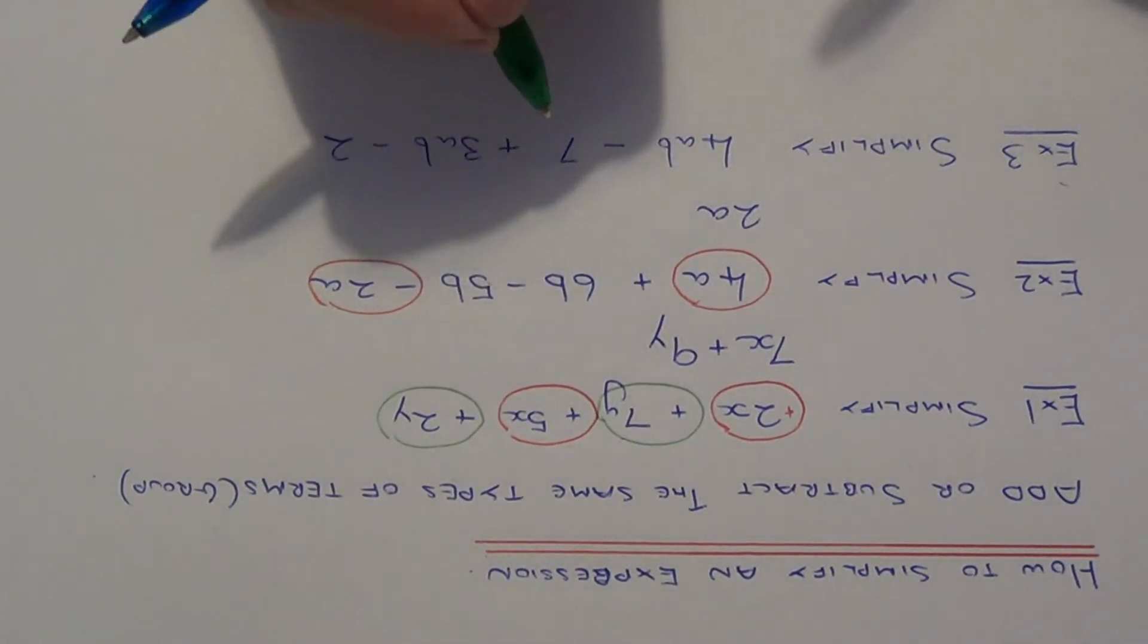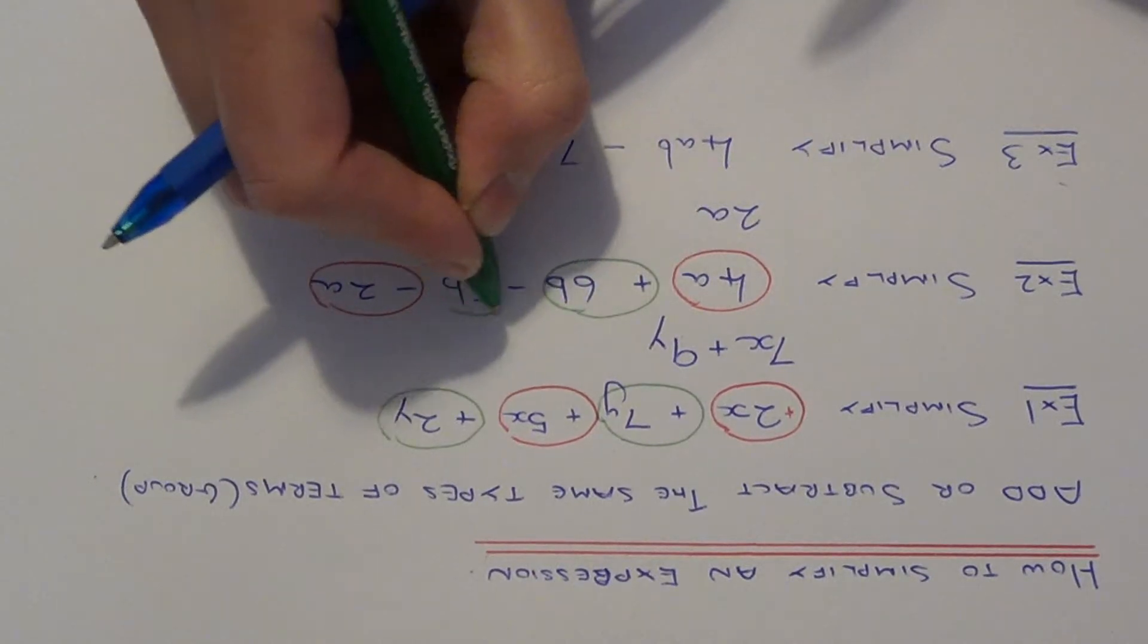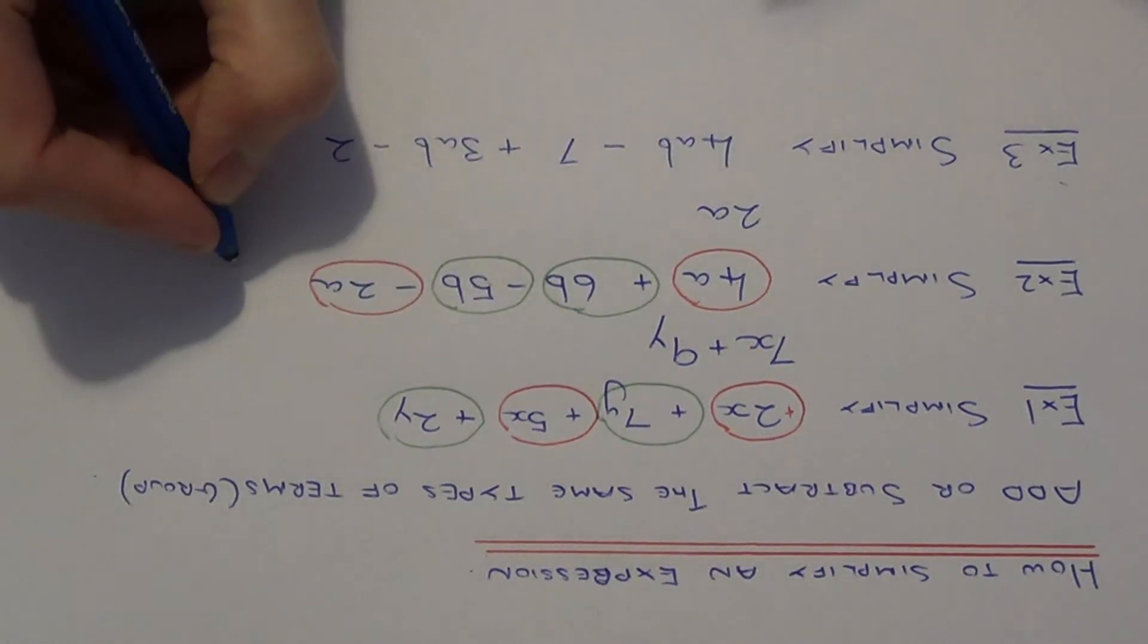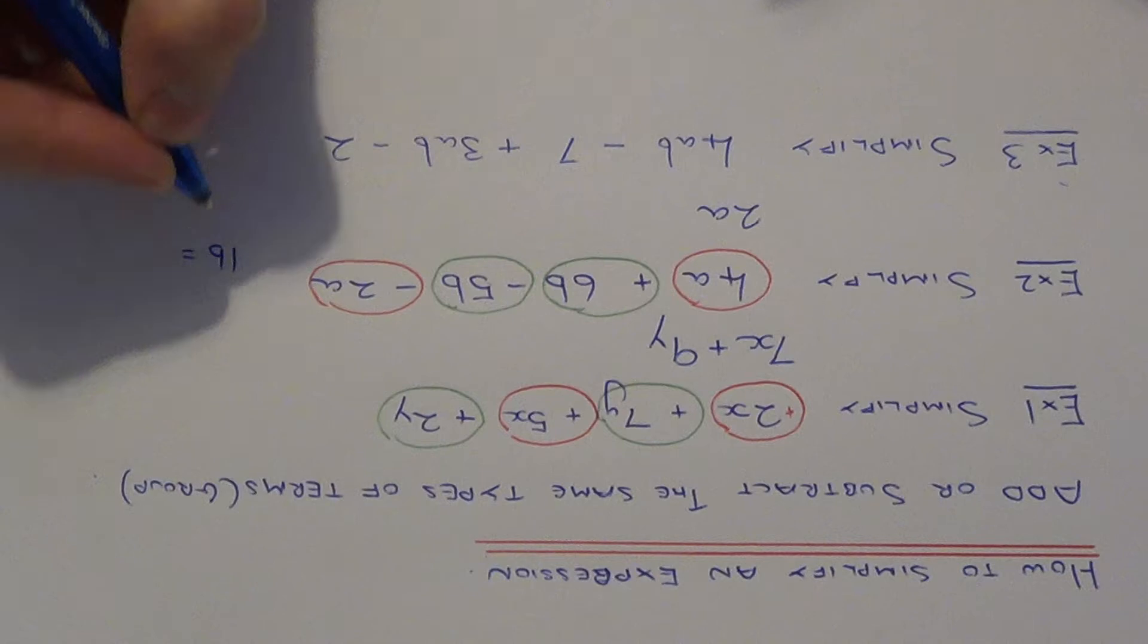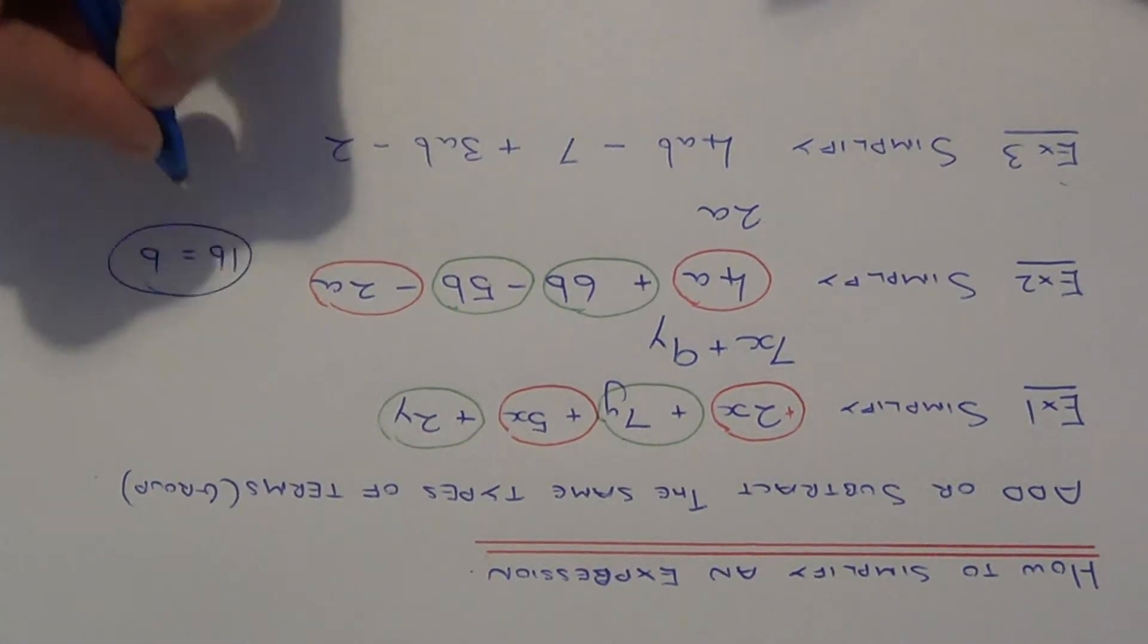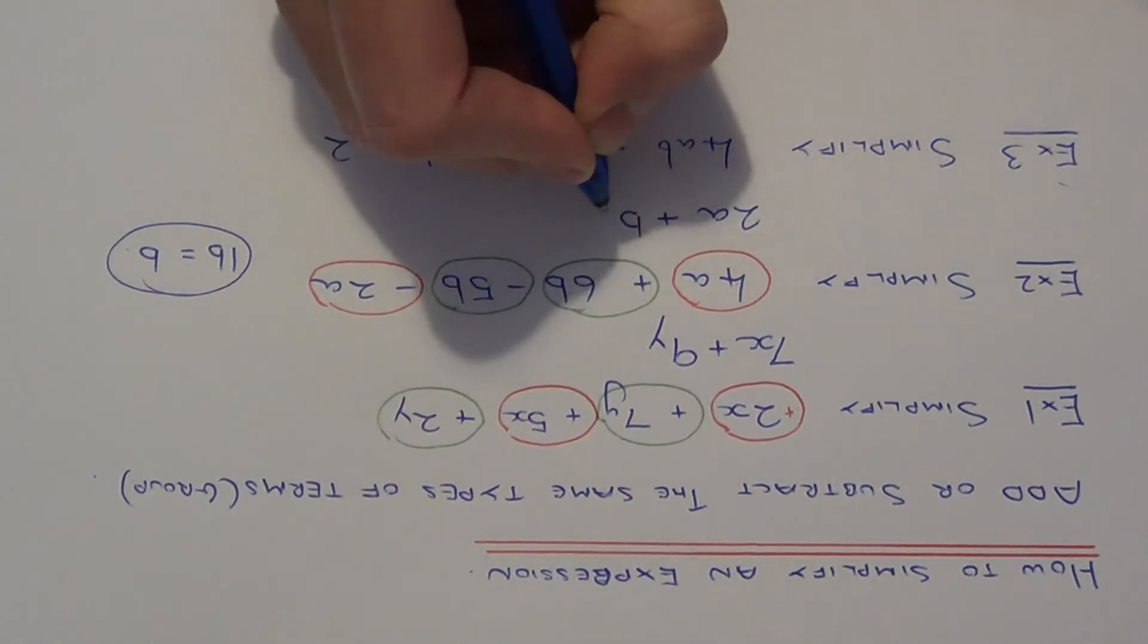Let's circle the b terms in green. So we've got plus 6b minus 5b. So 6b minus 5b will give us 1b. Another thing to remember as well is that don't just write down 1b. You need to simplify that to just b. So our final answer on this one will be 2a plus b.